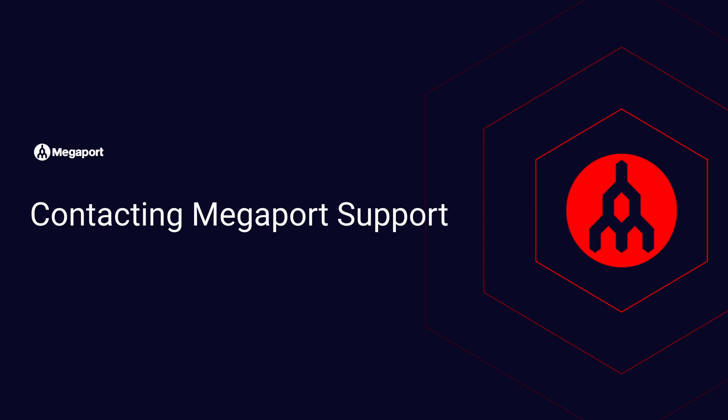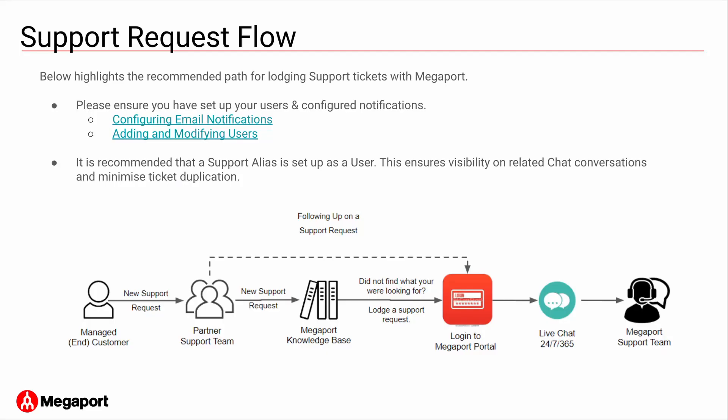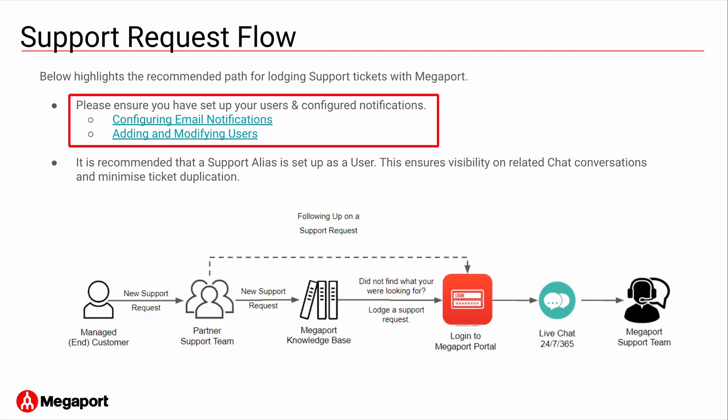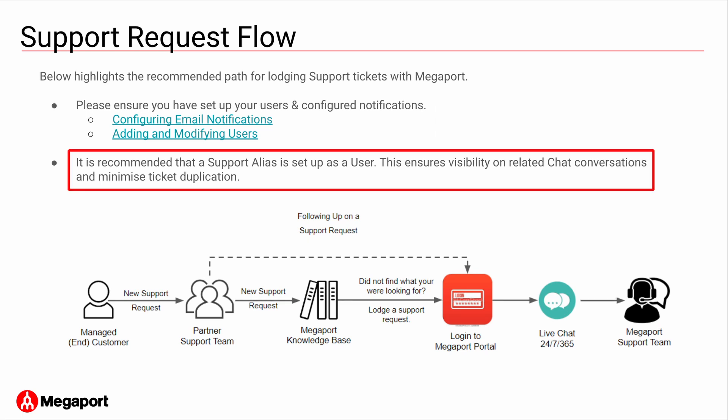Contacting Megaport support. Before you need to contact us regarding a service issue, we recommend that you configure your users for email notifications. In this way, you can stay informed regarding issues with your services such as maintenance or network outages. Configuring a support alias is also very beneficial. If your team uses one login for all support issues, you'll find that previous chat histories are available in our portal. Before reaching out to us, we encourage you to check your Megaport notifications in case you're being impacted by scheduled maintenance. Then we recommend that you follow the troubleshooting steps for your service.